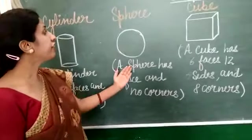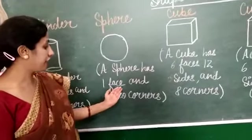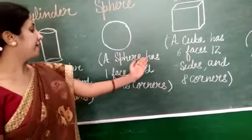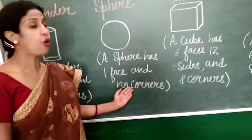Then sphere. A sphere has one face and no corners.